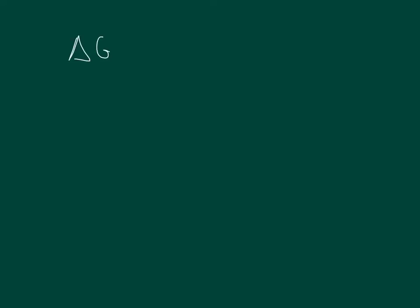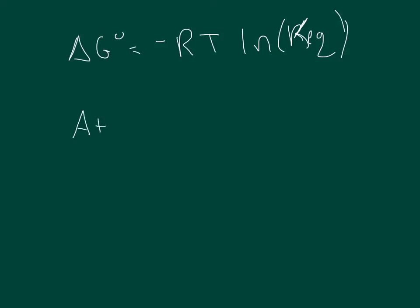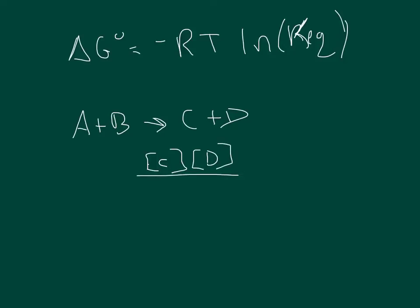Delta G standard state is equal to negative RT times the natural log of Keq. Keq is defined as follows: if we have a reaction A + B → C + D, then Keq equals the concentration of C times the concentration of D divided by the concentration of A times the concentration of B. When the reaction is not at equilibrium, this ratio is called Q; at equilibrium, it's called Keq.